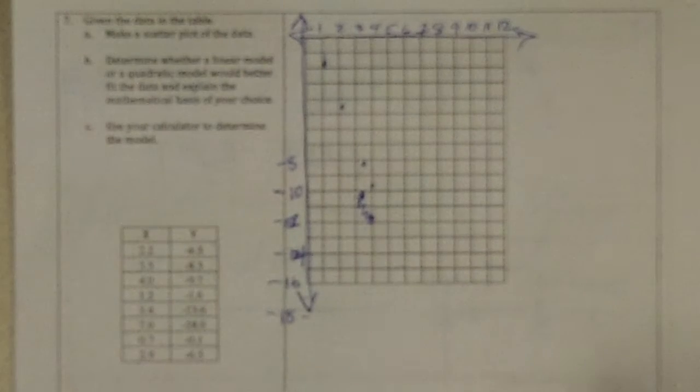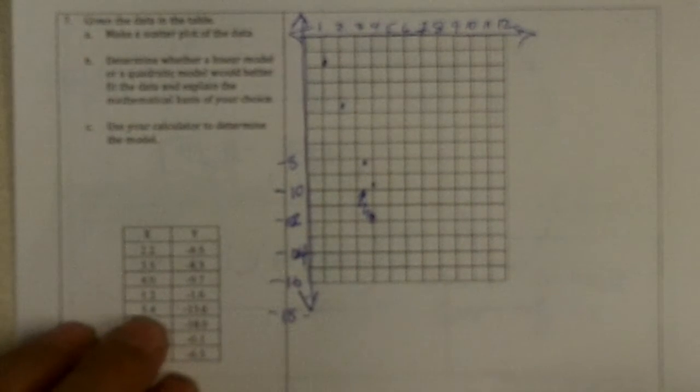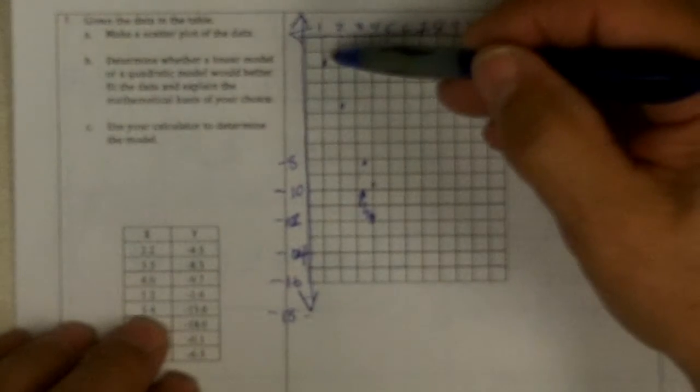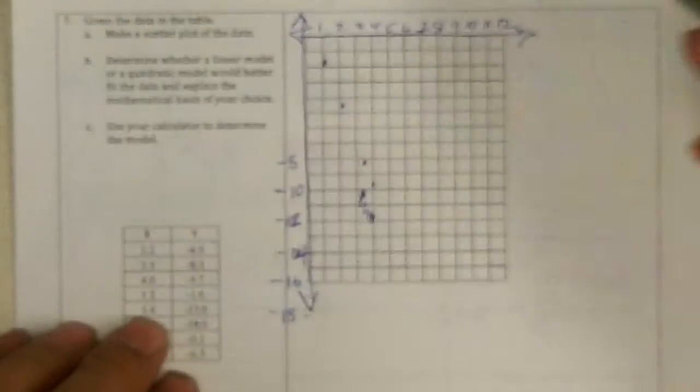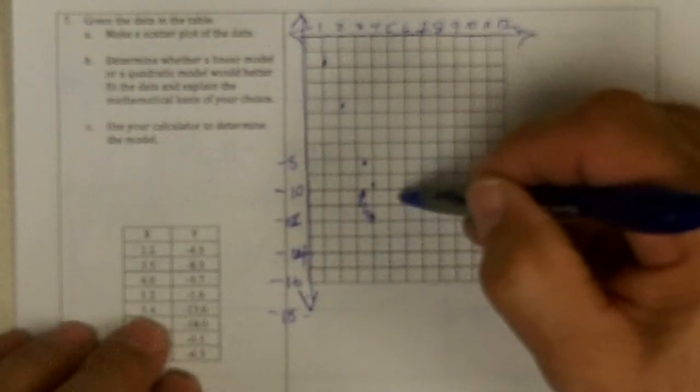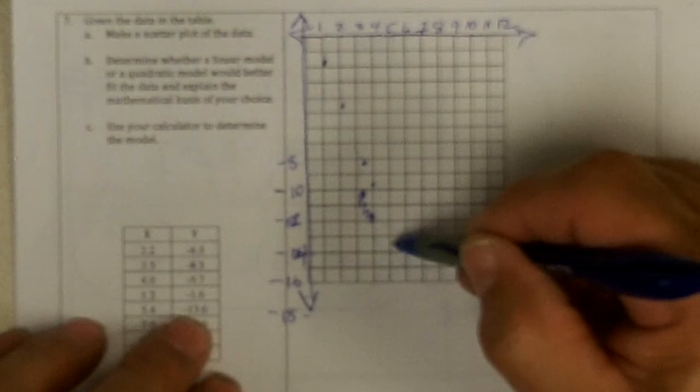And the one at 4.5 is at negative 9.7. Alright, now I'm on, let's see here. 1, 1, 2, 3, 4, 1, 2, 3, 4, so I'm on 5.4.